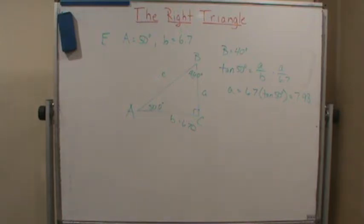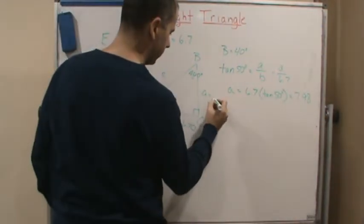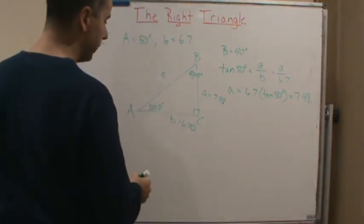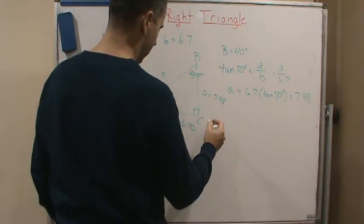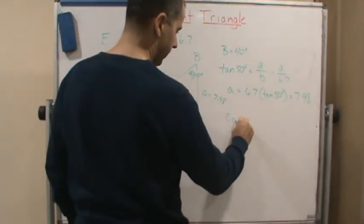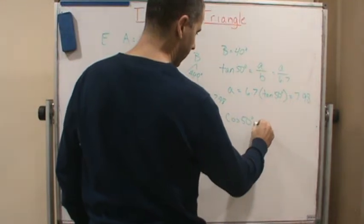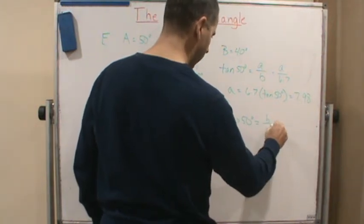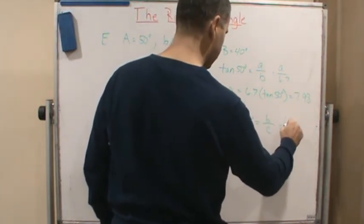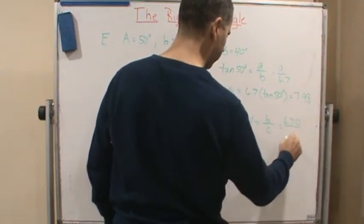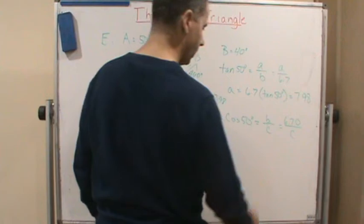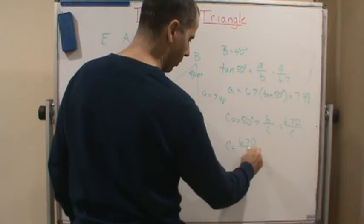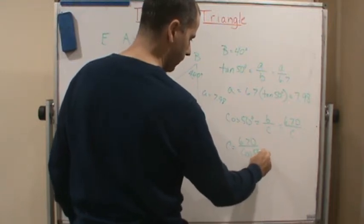Now, what about C? Okay, well here, we can use cosine of 50 degrees if we wanted to. So we could say cosine of 50 degrees equals what? Adjacent over hypotenuse. Well, that would be B over C, which equals 6.70 over C. Well, now, if I solve for C, that means C equals 6.70 over the cosine of 50 degrees.